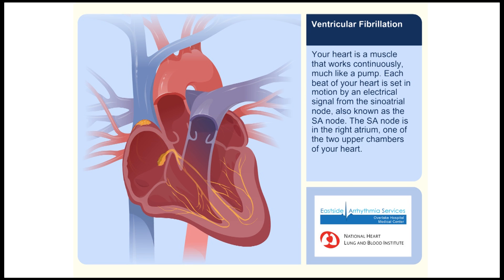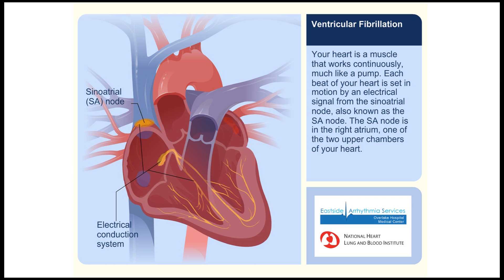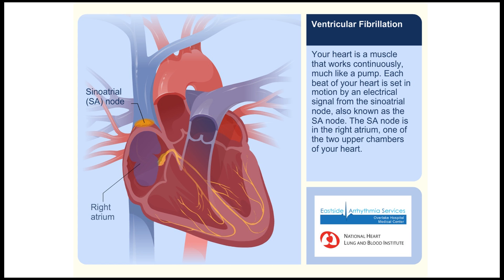Your heart is a muscle that works continuously, much like a pump. Each beat of your heart is set in motion by an electrical signal from the sinoatrial node, also known as the SA node. The SA node is in the right atrium, one of the two upper chambers of your heart.